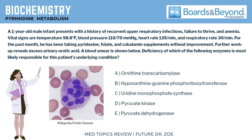For our first question, we have biochemistry. A one-year-old male infant presents with a history of recurrent upper respiratory infections, failure to thrive, and anemia. Vital signs are temperature 98.8 Fahrenheit, blood pressure 110 over 70, heart rate 135 per minute, and respiratory rate 30 per minute. For the past month, he has been taking pyridoxine, folate, and cobalamin supplements without improvement.